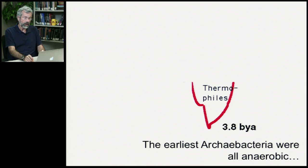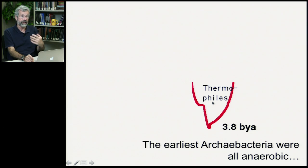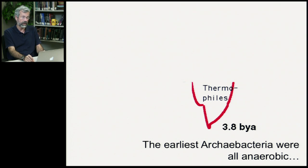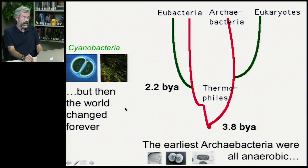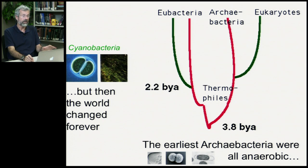These earliest archaebacteria, dating back to about 3.8 billion years ago, are called thermophiles because they loved heat, and they were also anaerobic — they didn't like oxygen. Expose them to the open air and they don't do well at all. Then something happened at 2.2 billion years ago: a huge transformation that changed the surface of the earth forever — the origins of the cyanobacteria.